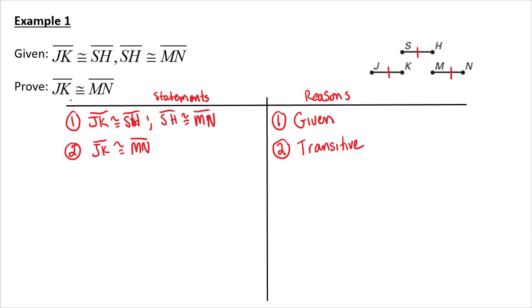What you're given, you know where you're trying to get to. I marked up my diagram. I used my given. Since SH was congruent to the same thing, I could say that they were congruent by the transitive property.